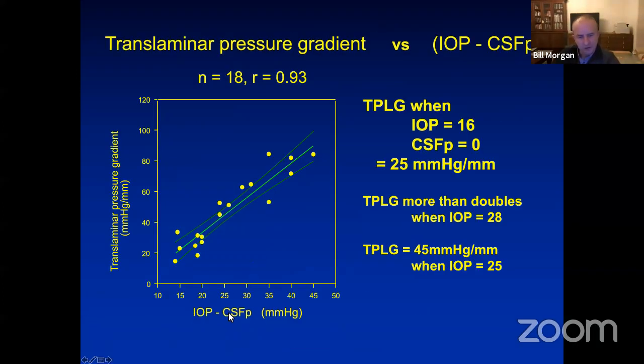The critical factor determining the pressure gradient was the difference between intraocular pressure and CSF pressure.